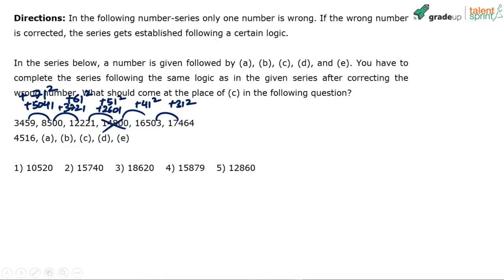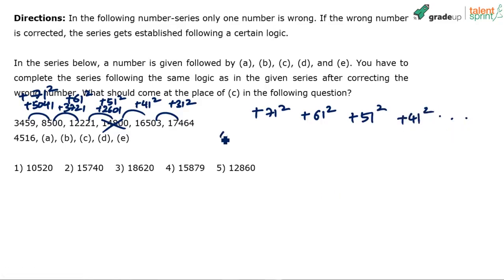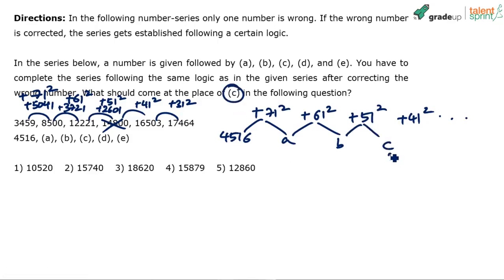The pattern is: plus 71 squared, plus 61 squared, plus 51 squared, plus 41 squared, and so on. So apply that — 4,516 plus 71 squared gives you a, plus 61 squared gives you b, plus 51 squared gives you c, and that's what you're supposed to find: what comes in place of c.